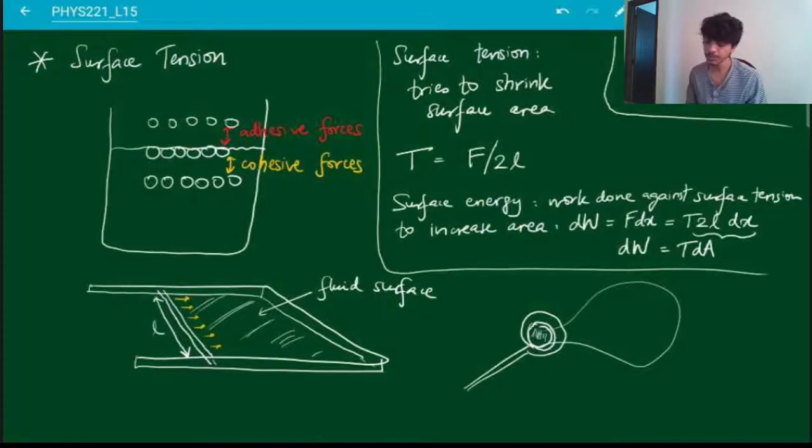Important thing to remember is that surface tension is always trying to reduce any surface area. This is why drops are spherical and bubbles are spherical—because for a given volume, the geometrical shape that gives you the least surface area is a sphere. That's why you have spherical bubbles and spherical drops.